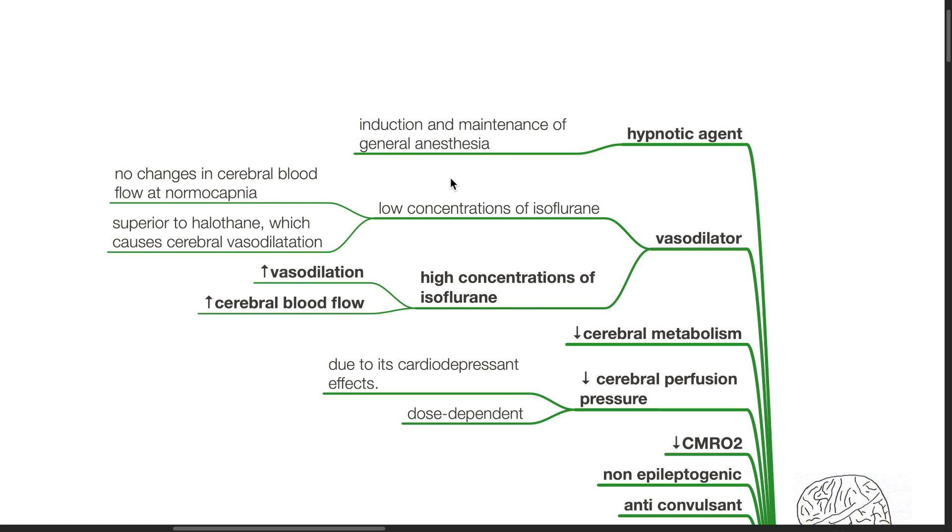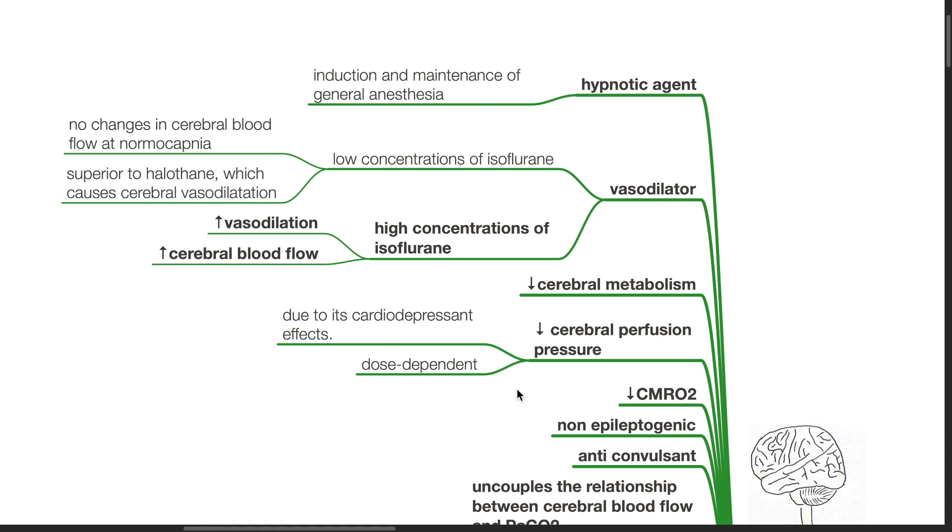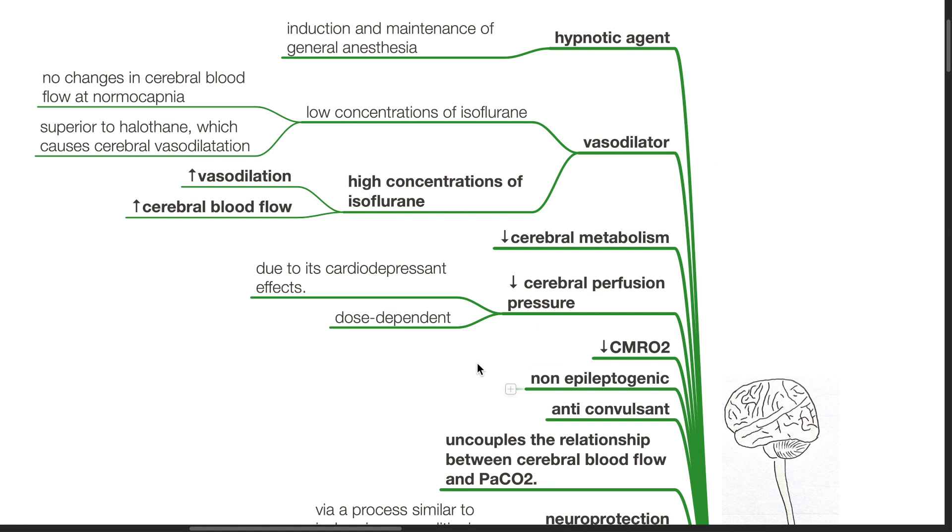Higher concentrations of isoflurane increase cerebral vasodilation and cerebral blood flow. There is decreased cerebral metabolism, decreased cerebral perfusion pressure due to isoflurane's cardio-depressant effects. It is dose-dependent. There is decreased cerebral oxygen consumption. Isoflurane is non-epileptogenic. It has anticonvulsant effects.